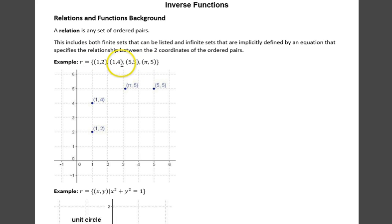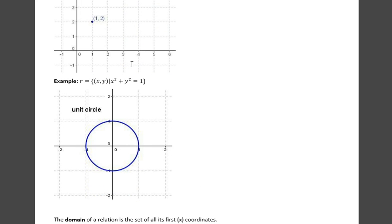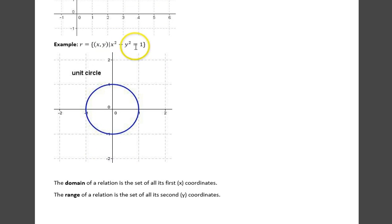For example, here we have a finite relation listed with four ordered pairs. And in this next example, we have an equation, x squared plus y squared equals 1. The set of all ordered pairs that satisfy that condition is the unit circle.